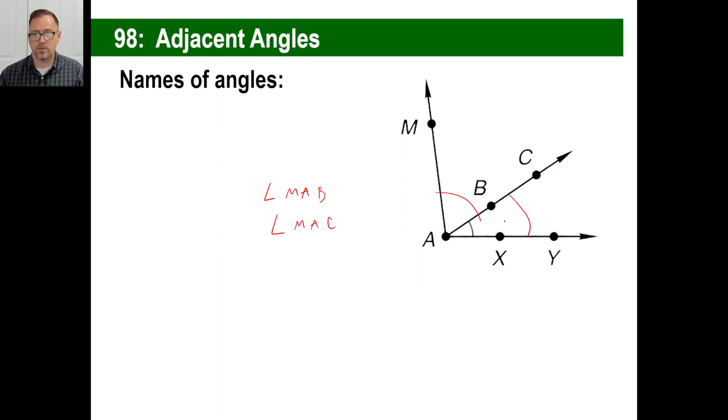Now, if you wanted to do this angle, you'd have to say something like C, A, Y. You could say, or you could say C, A, X, or B, A, X, or B, A, Y, or X, A, B, or X, A, C, or Y, A, C, and so on.